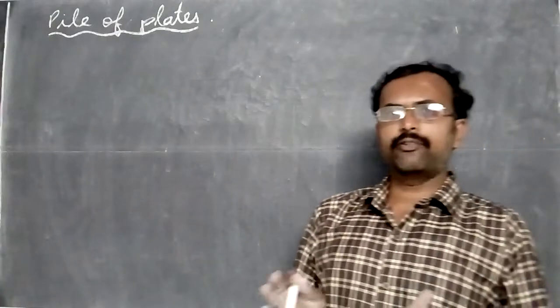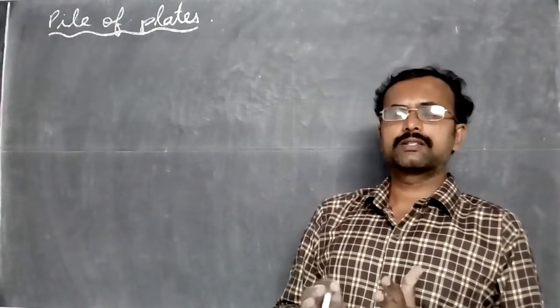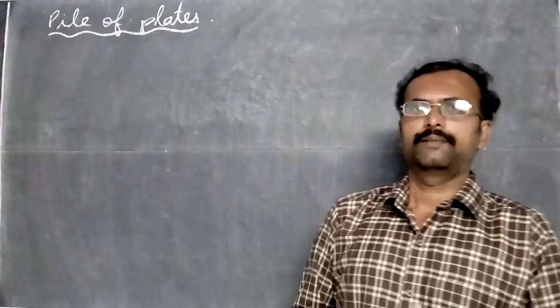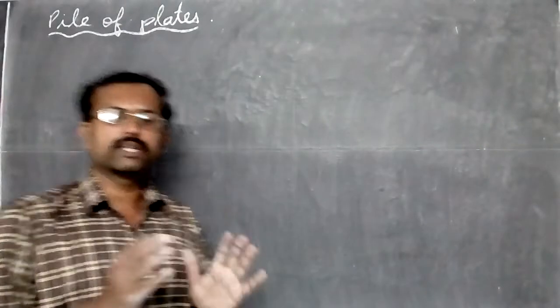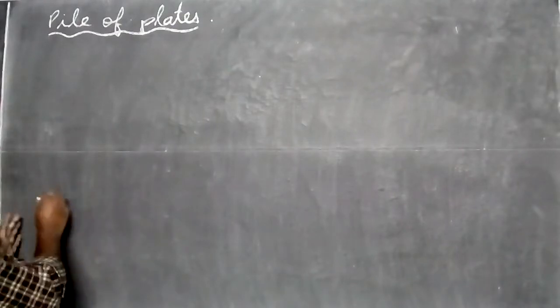Let us now study a device called a pile of plates. It uses polarization by reflection, and it's used to make polarized light. Let's see how it is done.